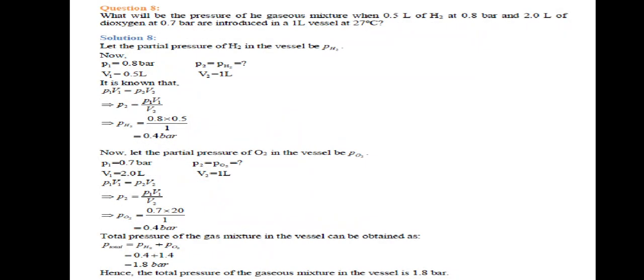Next, what will be the pressure of the gas mixture when 0.5 liter of H2 at 0.8 bar and 2 liter of dioxygen at 0.7 bar are introduced in a 1 liter vessel at 27 degrees centigrade? Again, 2 gases with different pressures and volumes are mixed. Final volume is 1 liter. We need to find the pressure of the mixture.